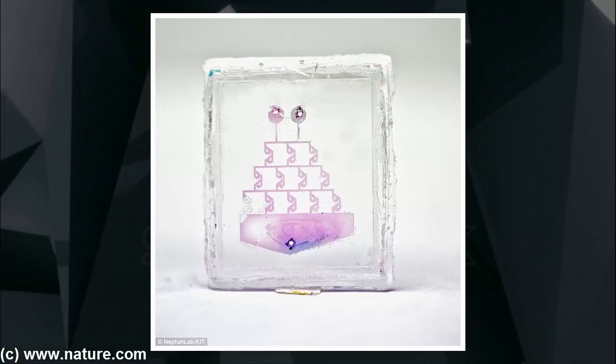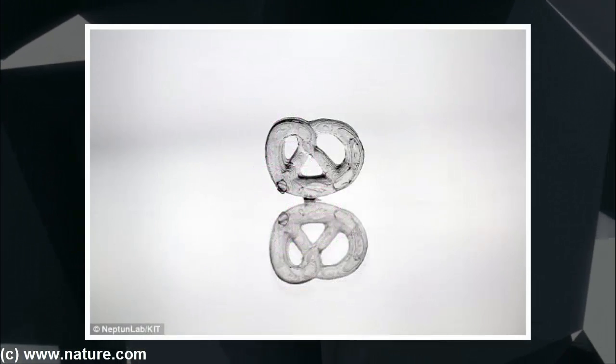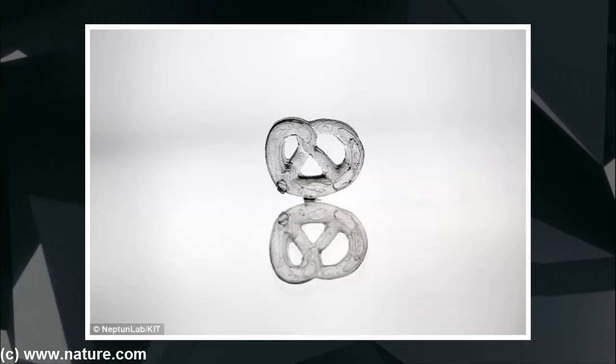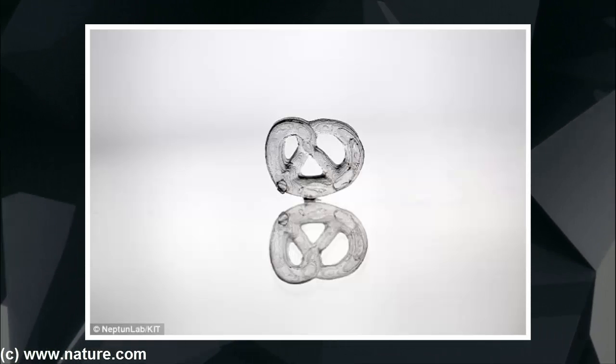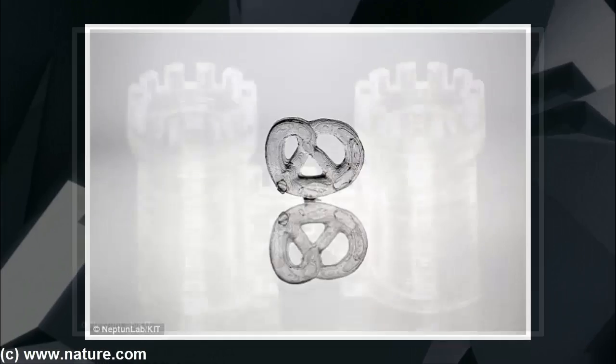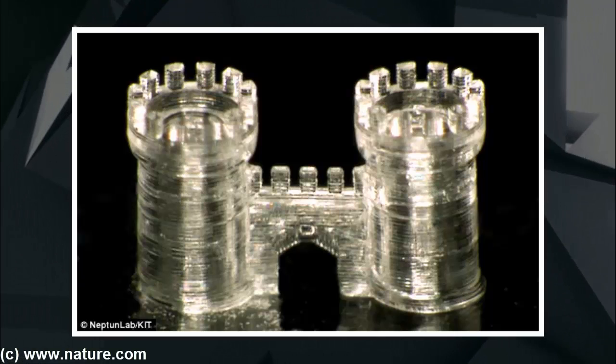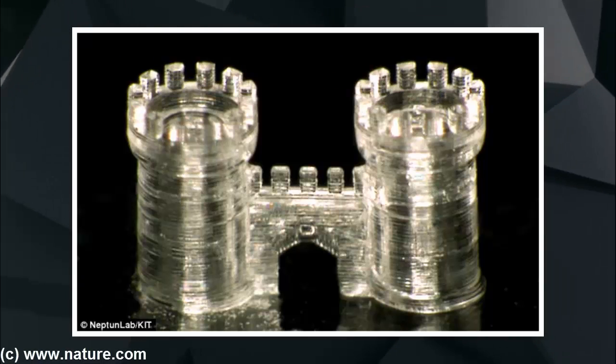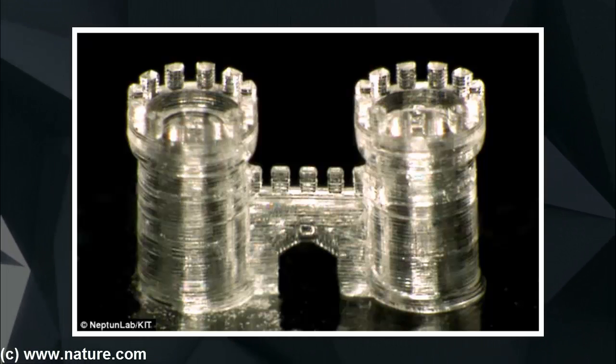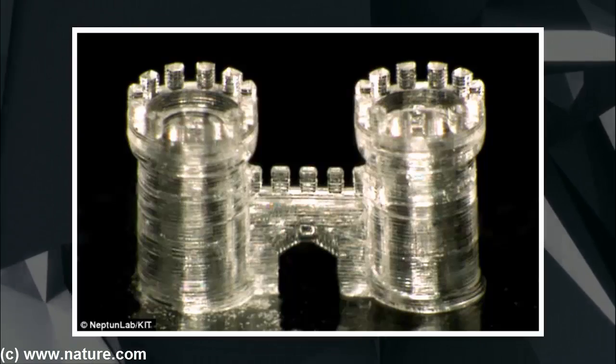These drawbacks have made glasses inaccessible to modern manufacturing technologies such as 3D printing. By adding metal salts, colored glasses can be created using this method. This work widens the choice of materials for 3D printing, enabling the creation of arbitrary macro and micro structures in fused silica glass. This process makes one of the oldest materials known to mankind accessible to modern 3D printing techniques.